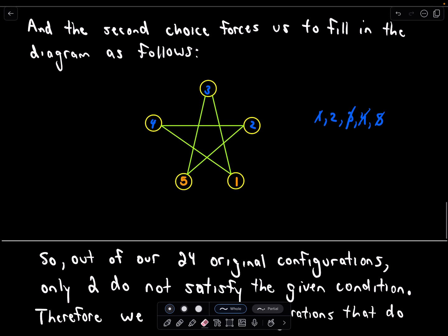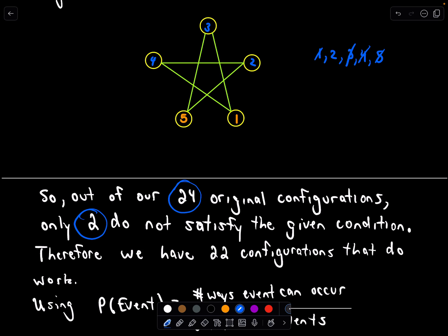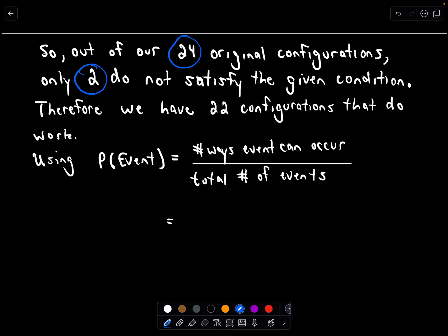So to me, it looks like out of our 24 original configurations, there's only 2 that do not satisfy the condition. And therefore, using our probability formula, the total number of ways that that event can occur divided by the total number of events, well, we said there's 24 total configurations. Of those 24 configurations, we said that 2 of those were bad. That was the number of bad ones that don't satisfy it. So there's 22 good ones. So there's 22 out of 24, which reduces to 11 over 12. And that is the probability of one of those diagrams satisfying that initial given condition.